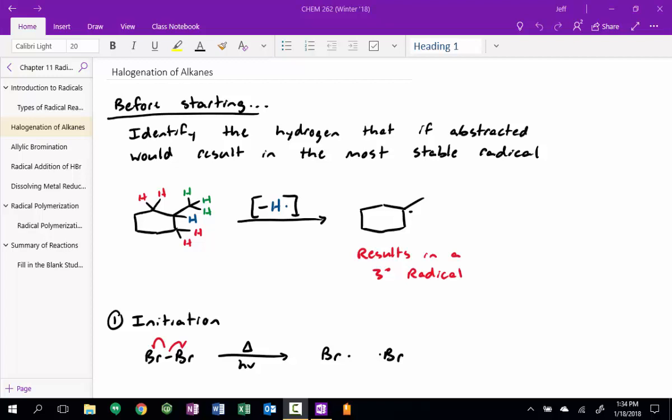All right, so yesterday we talked about radical halogenation of alkanes, and I always remind students that before you start this mechanism, you should always identify the hydrogen that, if abstracted, leads to the most stable radical, and we said that radicals follow the same stability trends as carbocations.